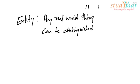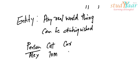So, let's see some examples of an entity. A person, say Alex, that's an entity. A cat, say Tom, that's an entity. A car, say Toyota Prius, that's an entity. So anything can be an entity if it can be distinguished.